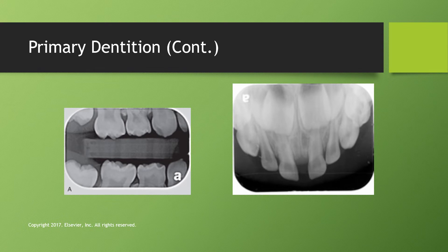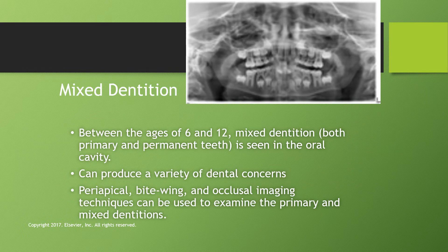Moving to primary dentition: here we can see the baby teeth or deciduous teeth. In mixed dentition, seen between ages 6 and 12, patients have both some primary and some permanent teeth in the oral cavity. This can produce a variety of dental concerns depending on overall growth and development. For radiographs you're typically taking some combination of periapical, bitewing, and occlusal images to determine whether the patient has all the teeth they're supposed to have.